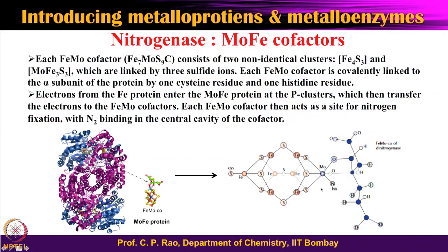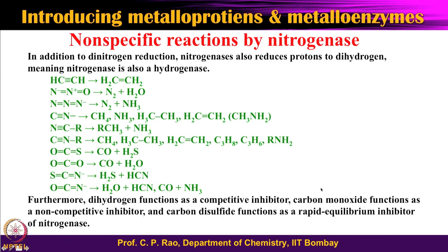To summarize: the iron protein has Mg-ATP/Mg-ADP binding regions and the Fe4S4 cluster; the MoFe protein has the P cluster and the catalytic FeMoCo. These are the compositional features of nitrogenase. The enzyme also catalyzes nonspecific reactions — for example, cyanide gives methane plus ammonia, carbon dioxide, isothiocyanate, and thiocyanate can all be reduced using the standard enzyme conditions.